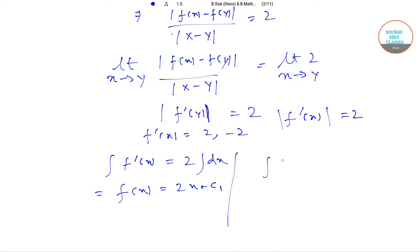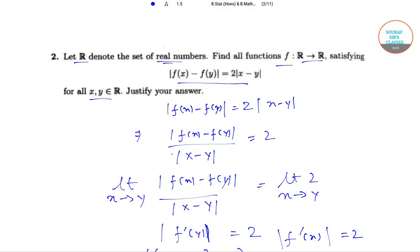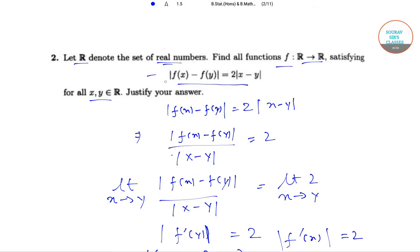Similarly, ∫f'(x)dx = -2∫dx. This implies f(x) = -2x + c₂, where c₁ and c₂ are two constants. So these are the functions which will satisfy our condition mentioned in our question.